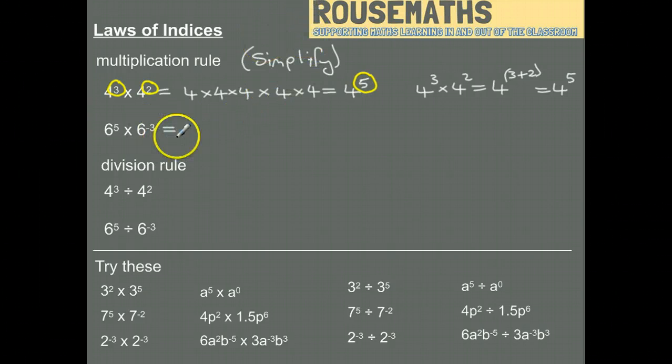If we've got some awkward things like negative powers, we'll just have a look at this one here. We've got 6 to the power of 5, and that's being multiplied by 6 to the power of minus 3.